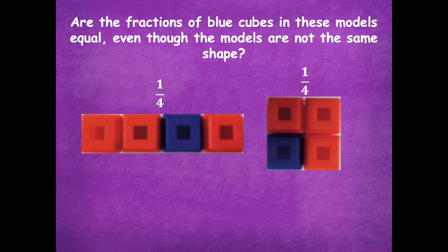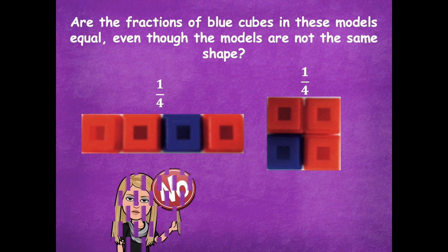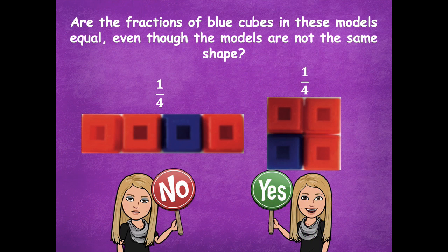Here we have both of those models we just looked at. Are the fractions of blue cubes in these models equal, even though the models are not the same shape? Somebody says no, they don't look the same so they're different. But then one of you says yes, they are the same because they're both one fourth blue — they're equal because the units are still the same size and the wholes have the same number of units, so they're just in a different shape.